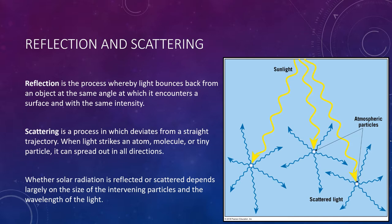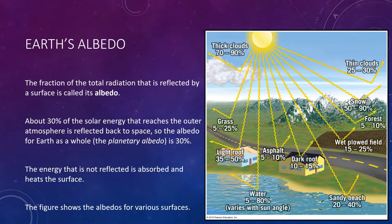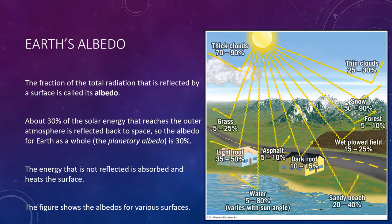Energy is returned to space from Earth in two ways: by reflection and emission of radiant energy. The portion of solar energy that is reflected back to space leaves in the same short wavelengths from which it came. The fraction of the total radiation reflected by a surface is called the albedo, a Latin term for whiteness. About 30% of the solar energy that reaches the outer atmosphere is reflected back into space, so the planetary albedo for Earth as a whole is 30%. However, the albedo varies considerably from place to place and from time to time, depending on cloud cover, particulate matter in the air, the angle of the sun's rays, and the nature of the surface. A lower sun angle means more atmosphere must be penetrated, creating a longer obstacle course and greater loss of solar radiation.